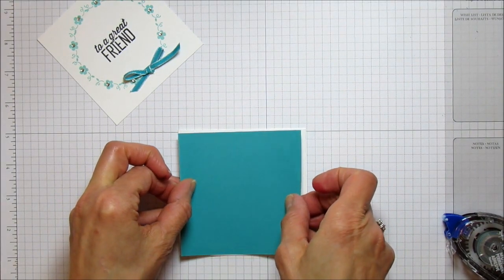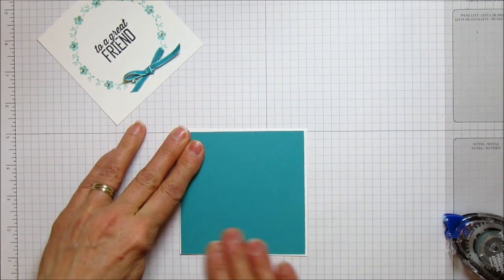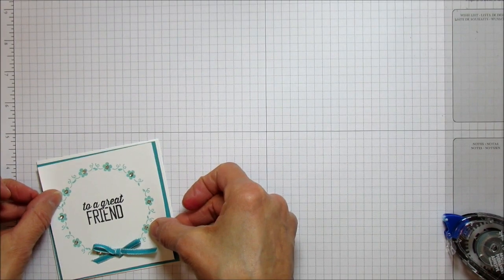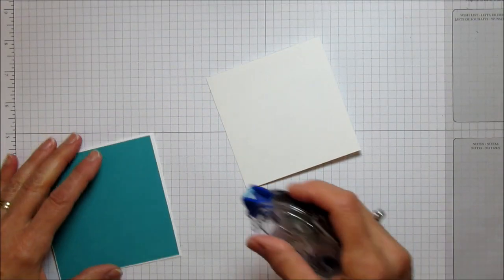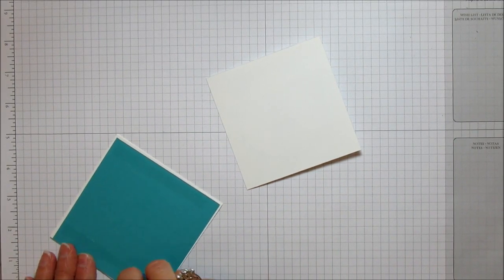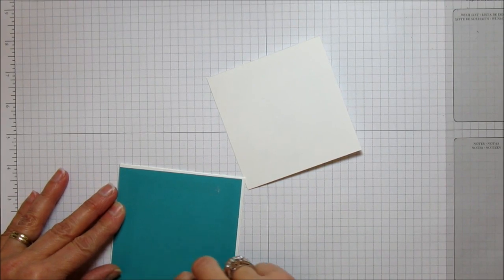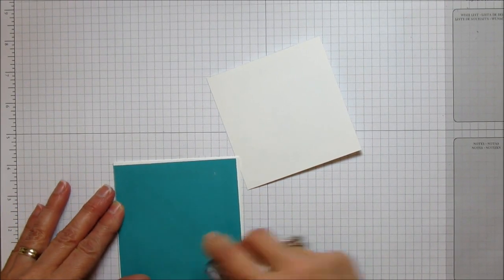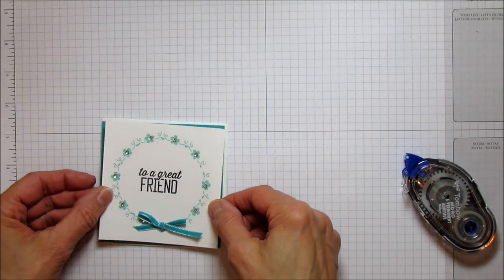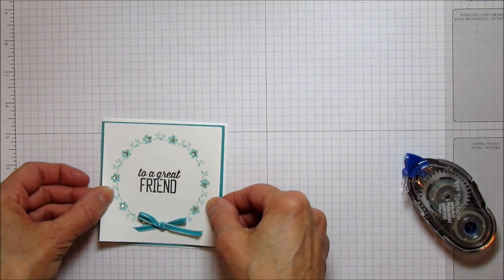I'm going to center this on the card base, and then we're ready to put this on. You can pop this up if you want; I think I'm just going to stick it down. I'm going to go ahead and put it on here. The first time I did it I put the rhinestones on after, so you probably want to do that because it's harder to put your adhesive on when you already have the rhinestones on.